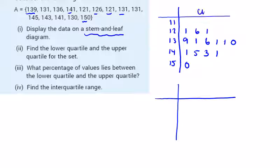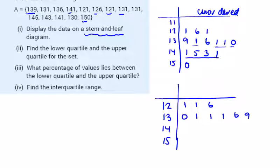A quick bit of rough work will save us so much time. We can say 12, 13, 14, and 15 are the ones that we need. If we order 12, we have 1, 1, and 6. If we order 13, we have 0, 1, 1, 1, then 6 and 9. If we order 14, we have 1, 1, 3, and 5. And 15 is just the 0.